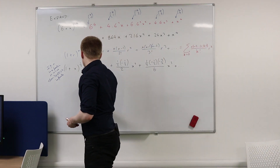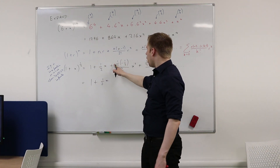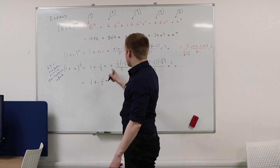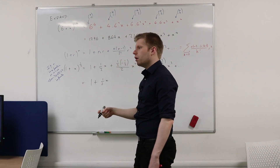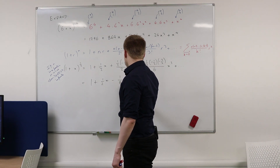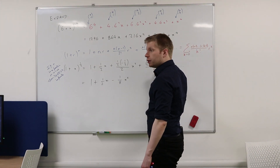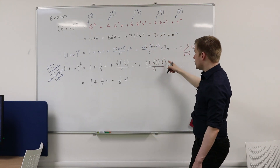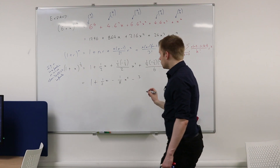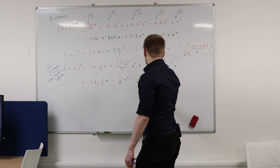So if we tidy this up, we get 1 plus, well, that's just a half times x, so you could write it as x over 2 — I'll just leave it as a half x. Then you have 1 half times by negative 1 half divided by 2. So 1 half times negative 1 half is negative 1 quarter. Divide that by 2: negative 1 eighth times by x to the power of 2. Then half times negative 1 half times negative 3 over 2 — so that's going to be positive — positive 3 over 8 on the numerator. Then you're going to divide that by 6, so over 48. And then you've got x to the power of 3, and so on.